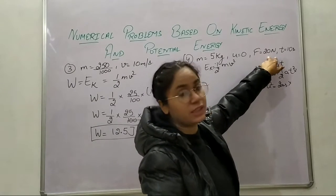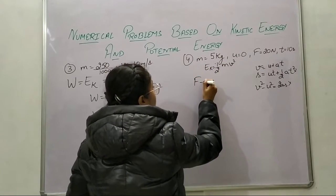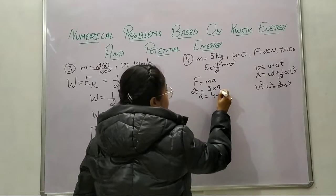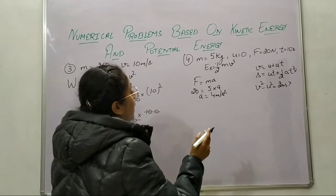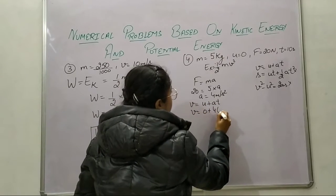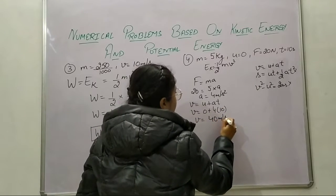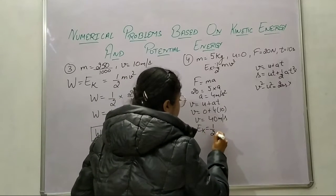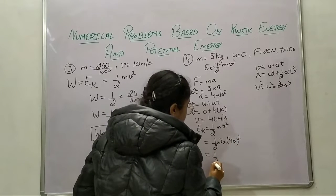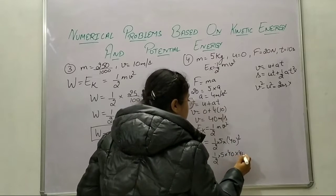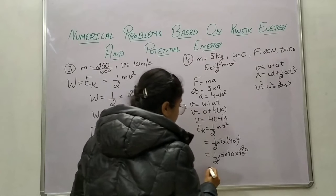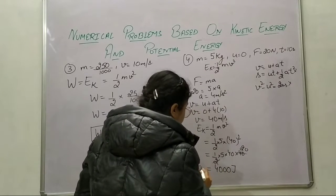Using Newton's second law, F = ma: 20 = 5 × a, so acceleration = 4 m/s². Now using v = u + at: v = 0 + 4 × 10 = 40 m/s. Now kinetic energy = (1/2) × 5 × 40² = (1/2) × 5 × 40 × 40 = (1/2) × 5 × 1600. This gives 5 × 20 = 100, and 100 × 40 = 4000 joule.